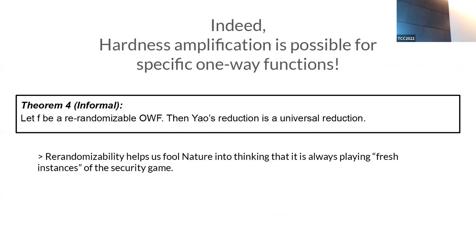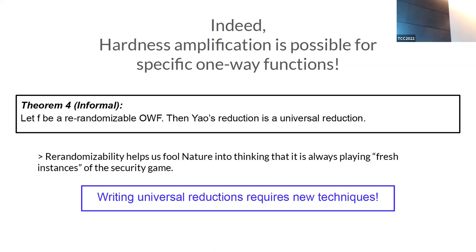Is the black-box use of g inherent? Yes — but we can do hardness amplification for specific one-way functions. If f is re-randomizable — meaning you can take an image, re-randomize it to look like a fresh image while still being able to derive the same solution — then we can do hardness amplification using the direct product construction. Intuitively, re-randomization fools nature into thinking it is playing fresh instances of the security game.